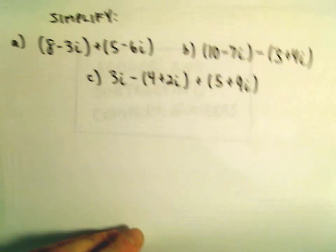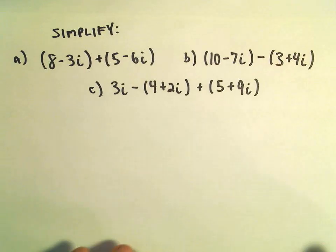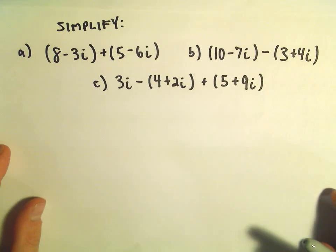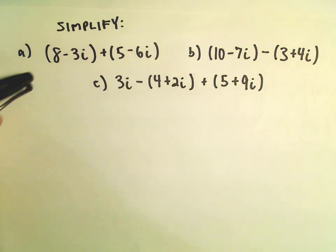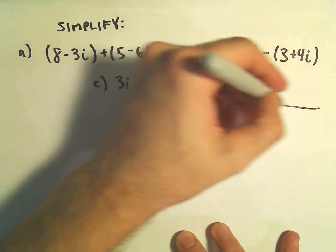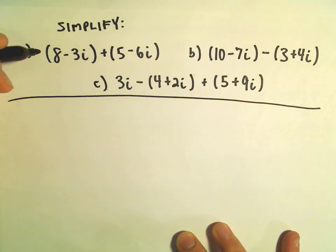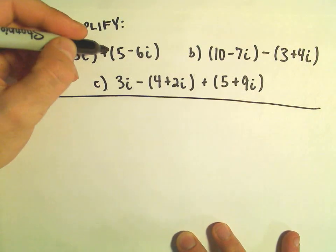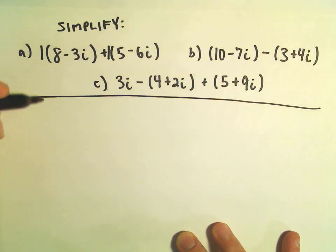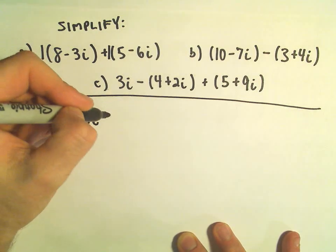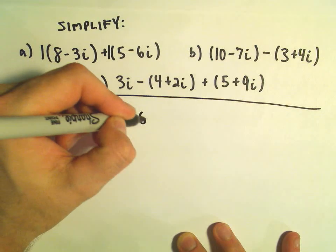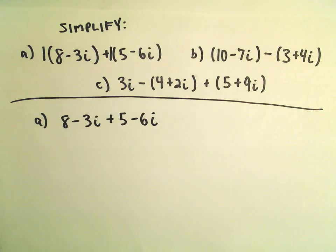Suppose we want to do 8 minus 3i plus 5 minus 6i, so our first problem here. You can think about there being a positive 1 in front of both sets of parentheses. So if you distribute that you would simply get 8 minus 3i and then positive 5 minus 6i. And now I just combine like terms.